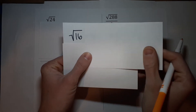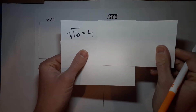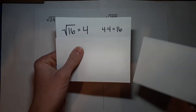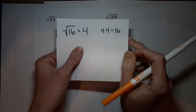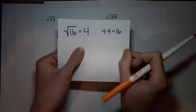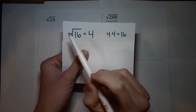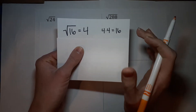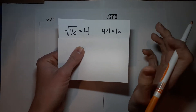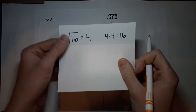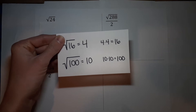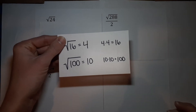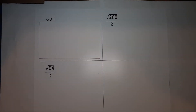The square root of 16 is 4. Why? Because 4 times itself — 4 times 4 equals 16. So a square root is asking: what number multiplied by itself gives me that number? The square root of 100 is 10 because 10 times 10 is 100. So that is what a square root is asking.